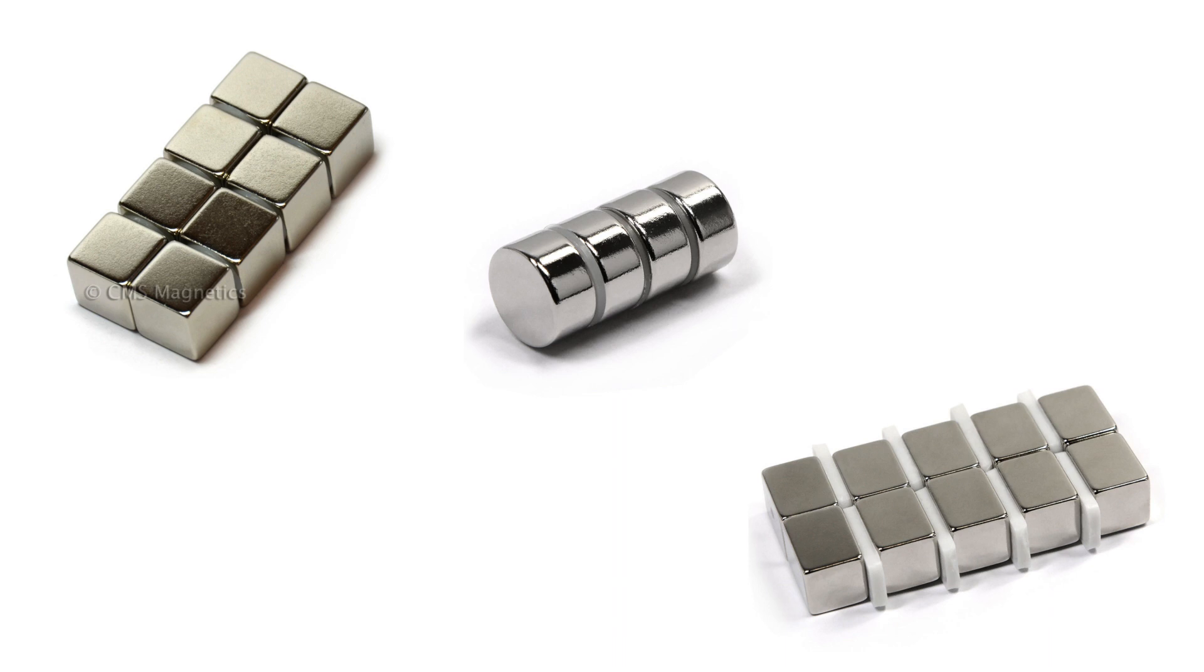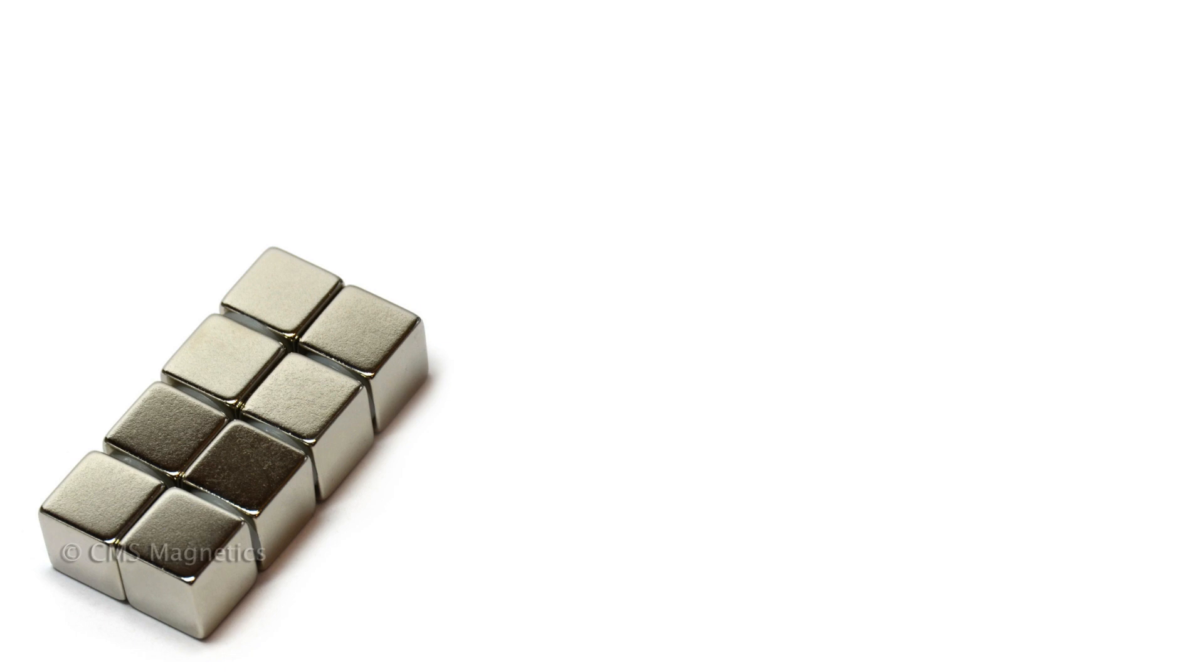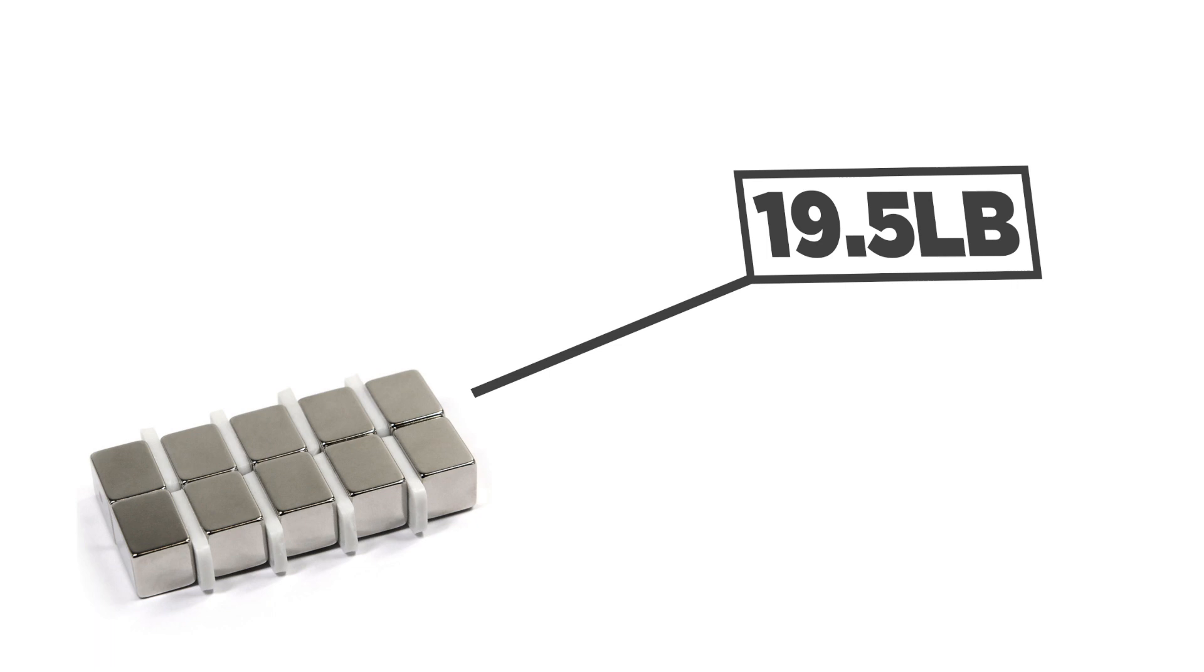The most powerful set has a pull force of 28 pounds. The second set has a pull force of 19.5 pounds, and the weakest set has a pull force of 13.5 pounds. Nine steel carbon chrome plated ball bearings will be used as projectiles.